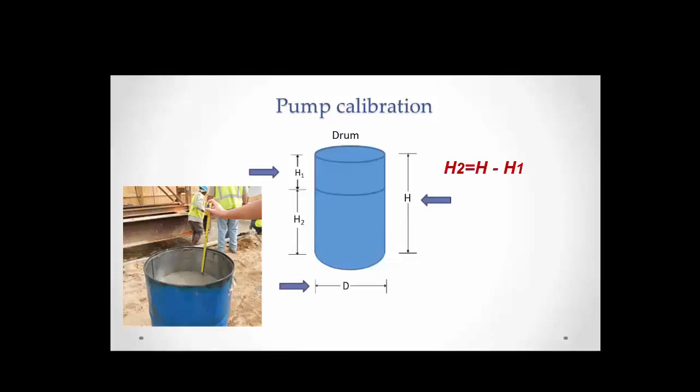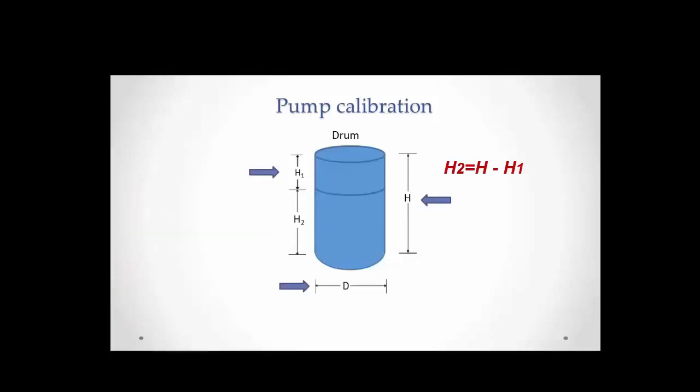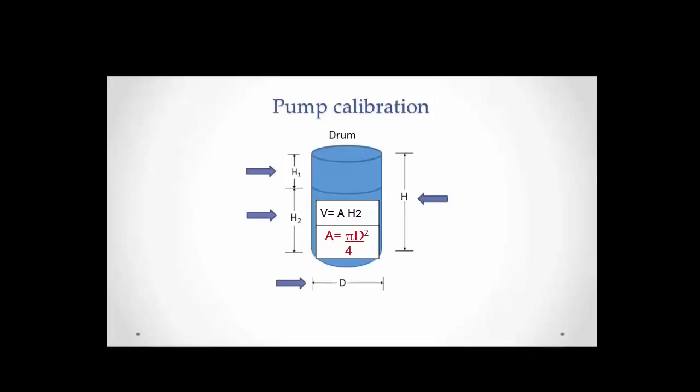Then, we determine the height of grout by subtracting H sub 1 from H. We will compute the volume by multiplying the area of the circle of diameter D times the height H sub 2 of the cylinder of grout. The area of the circle is π D squared divided by 4, which is multiplied by H sub 2 to obtain the volume of grout pumped to the drum.